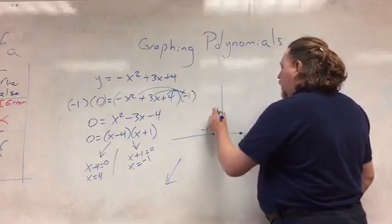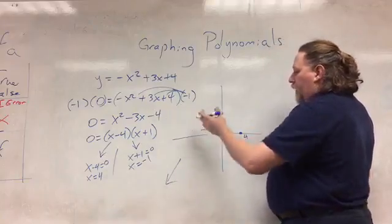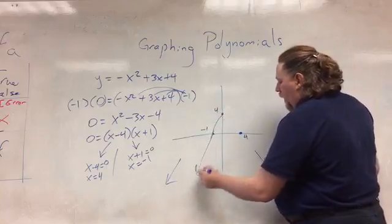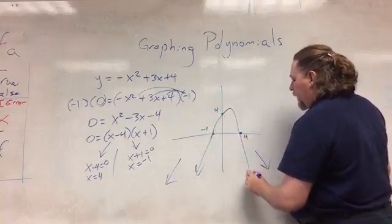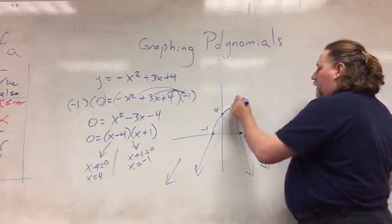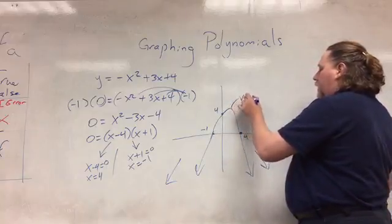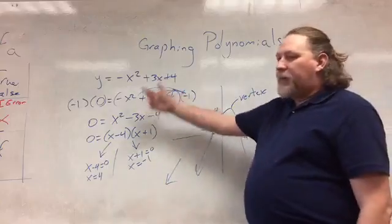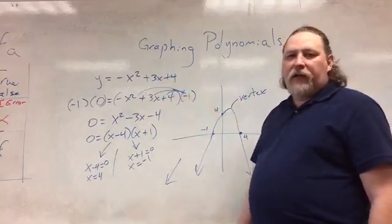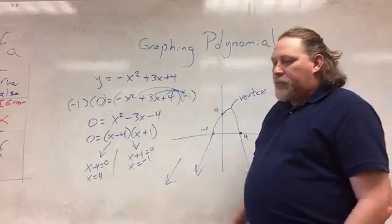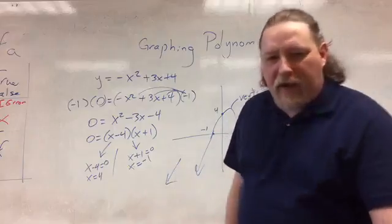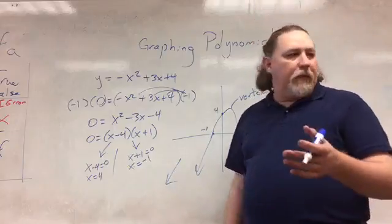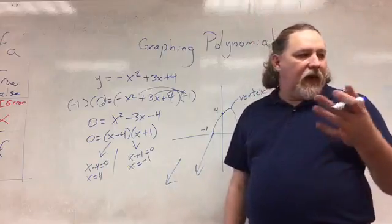We know the graph goes down as we go to the left and down as we go to the right, so our graph must look something like this. We have a vertex here in the middle. If I wanted to find that vertex, I would go back and do completing the square again. But we're not going to take up time with that right now because we need to look at an example with a higher power.